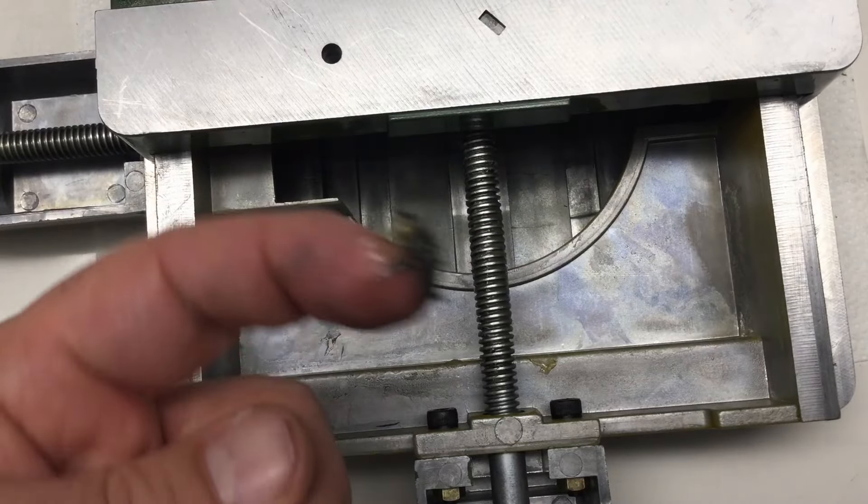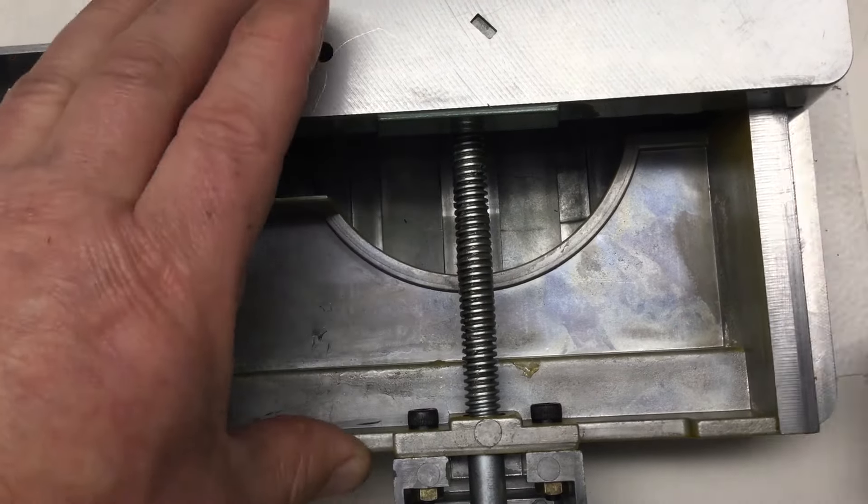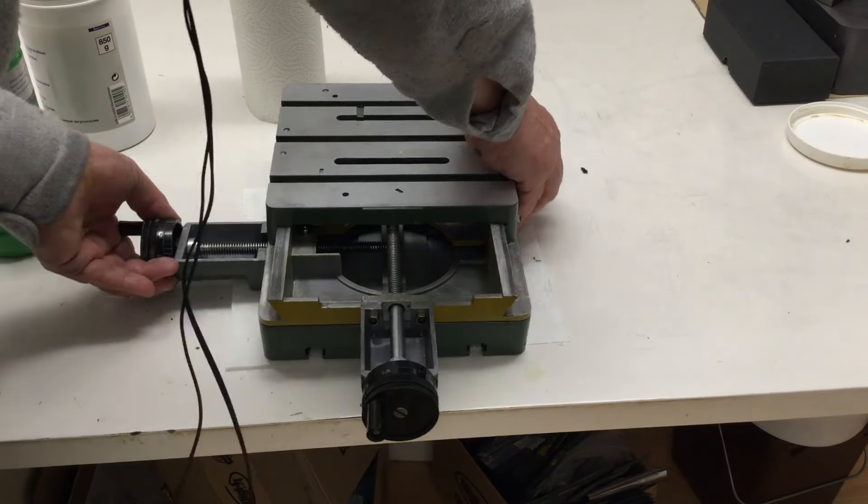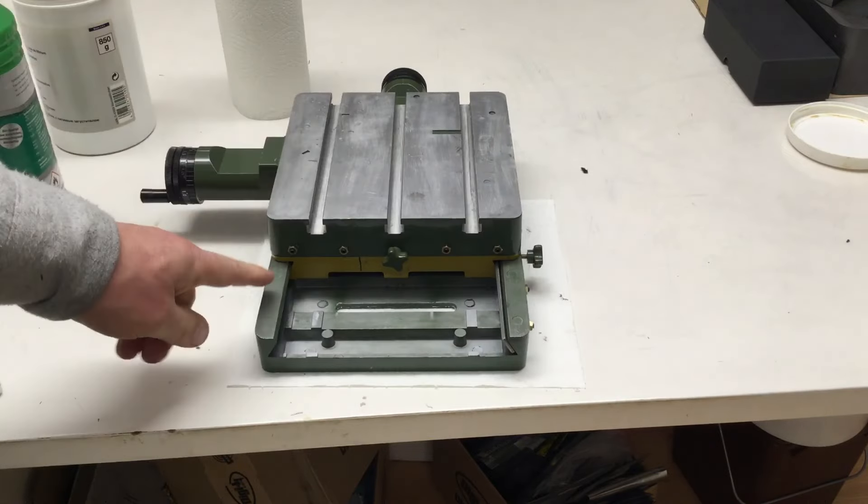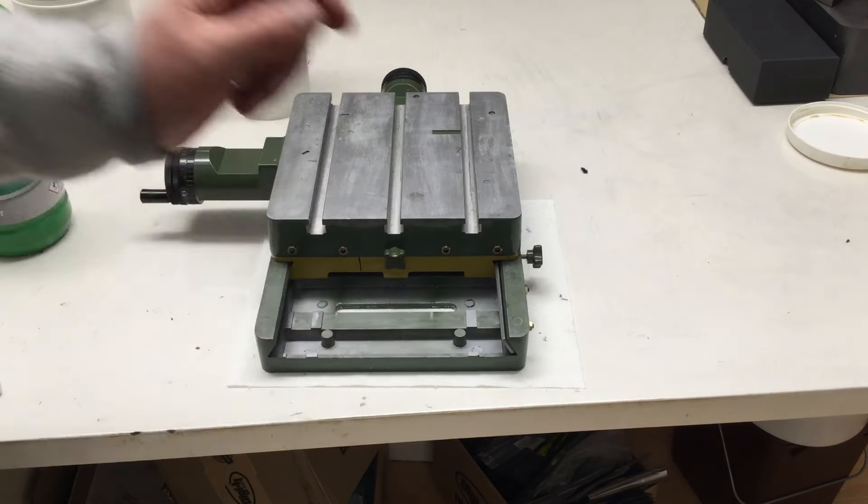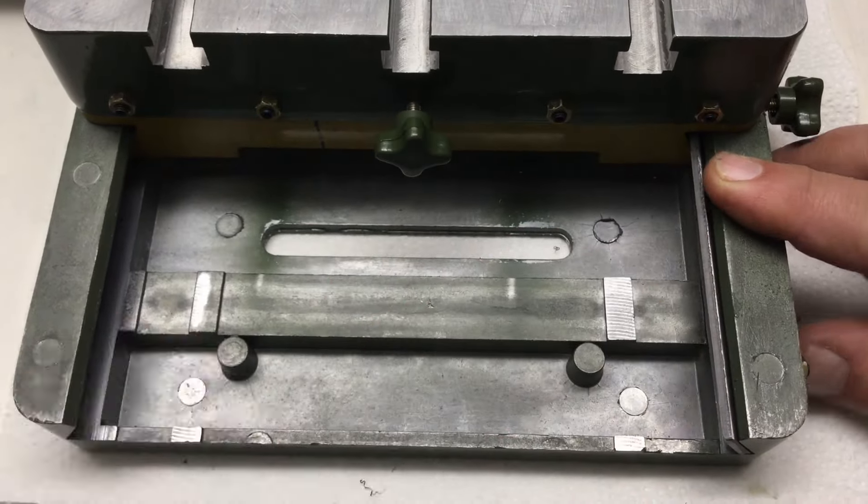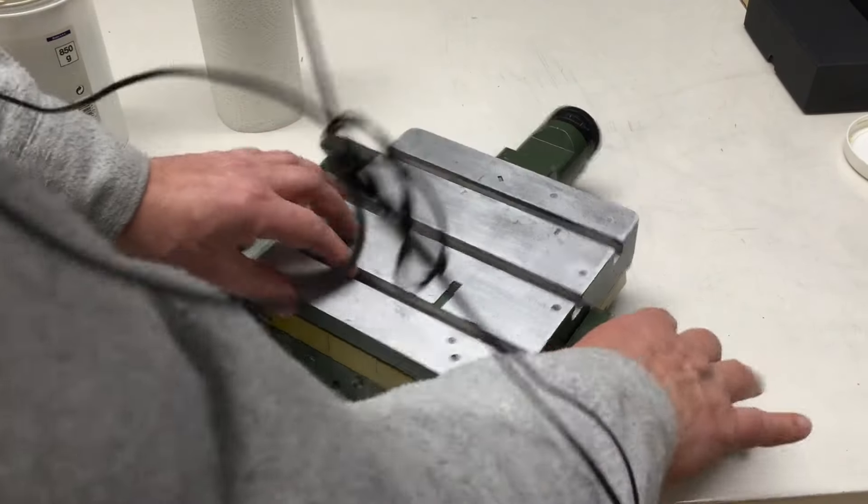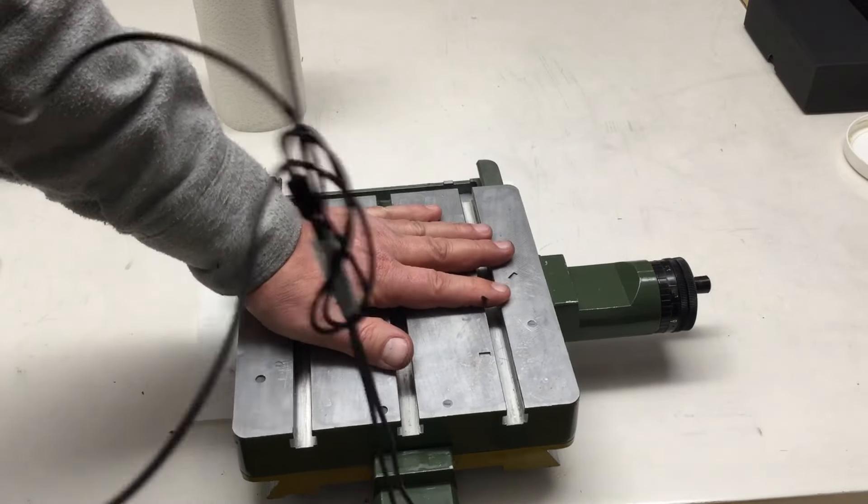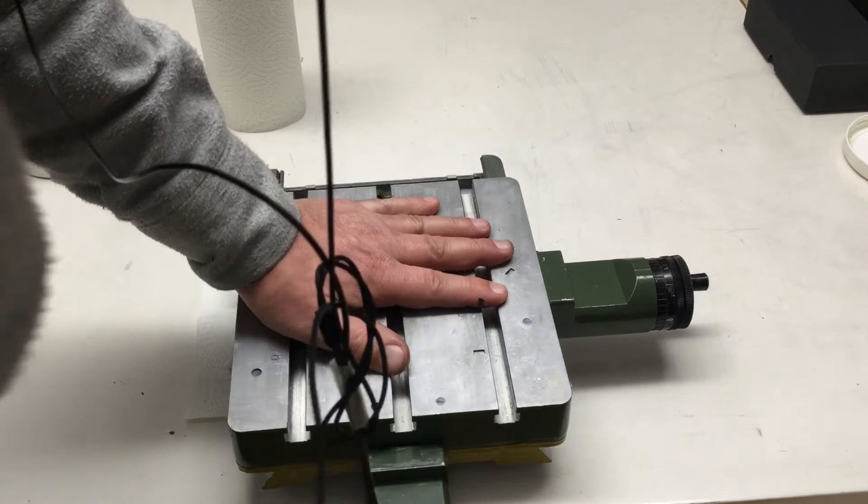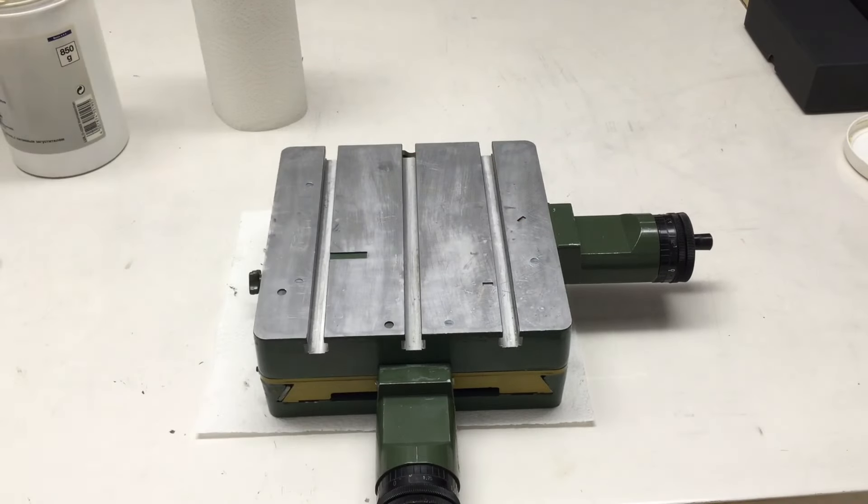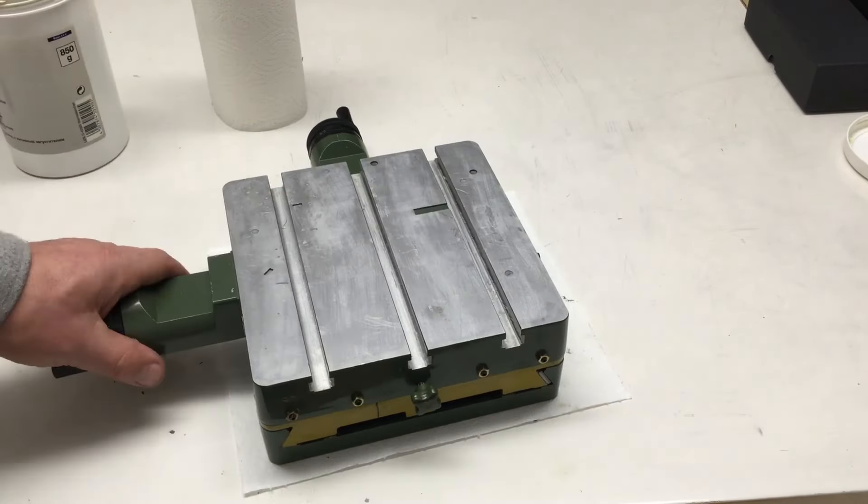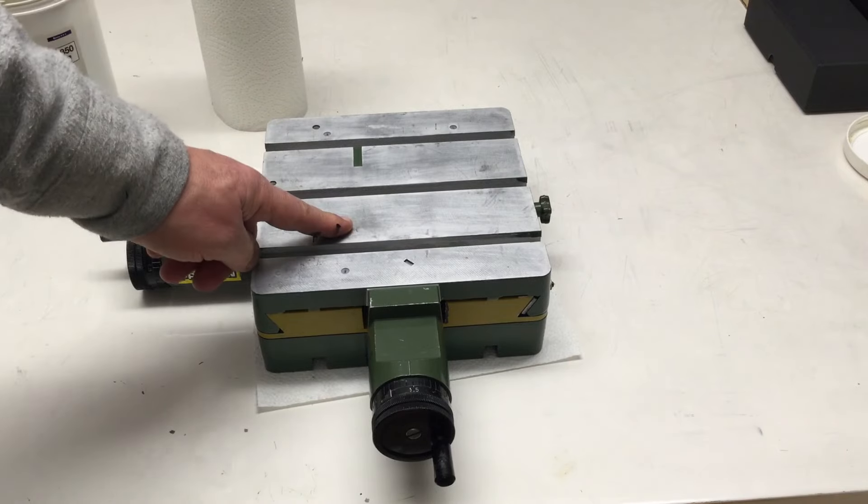And of course, lubricate the ways. Oh, see, I forgot to clean something. Now, flipping the whole thing again and repeating for the ways on the other side. And finally, I hope I didn't forget anything. We're going back to the middle position. Wipe off any excess grease. And this can go back on the milling machine.